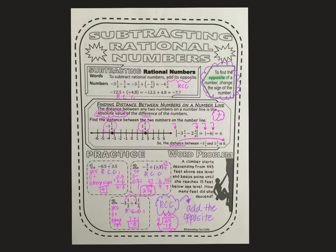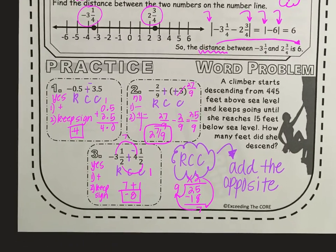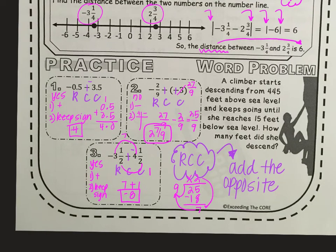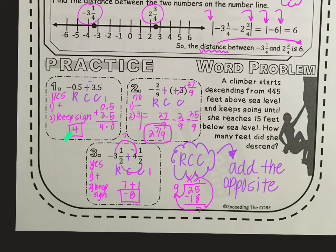For the practice problems, we did keep-change-change on all of them because they were all subtracting. We added the opposite and then added decimals. We had to subtract here because the signs were different — it was a no. And we had to subtract here because the signs were different. And we added here because it was a yes — they were both negative. So be careful that you actually bring that sign down to the answer. I try to put that down in my answer box right away.